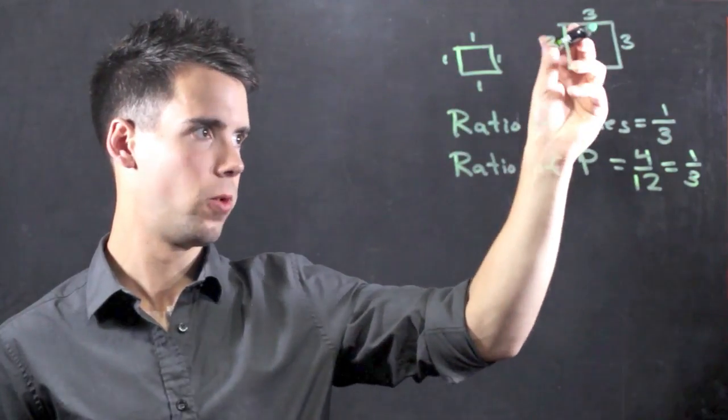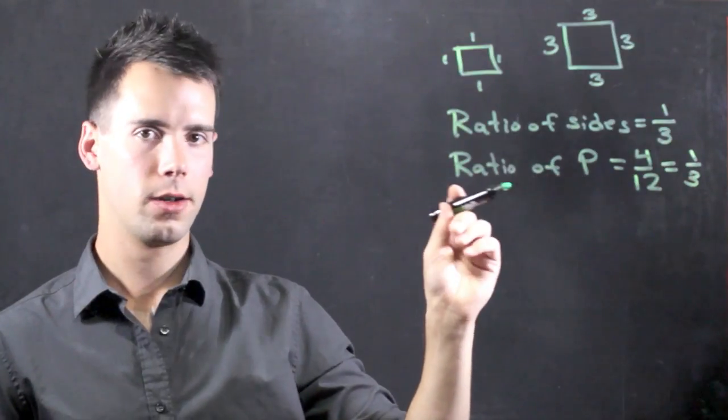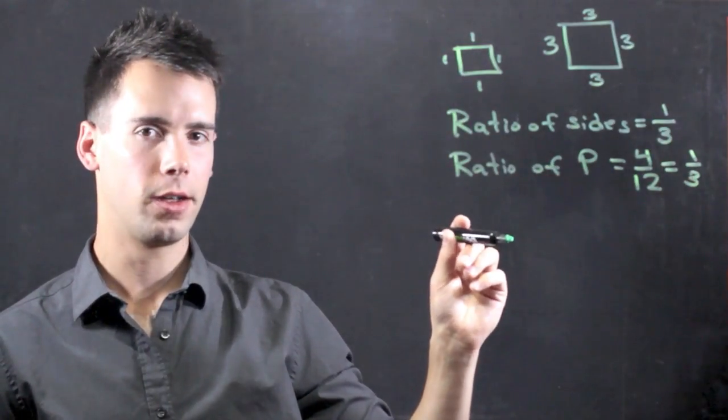If each side was 4, the ratio would be 1 to 4. So the ratio of sides is directly proportional, in fact equal to the ratio of the perimeter of two polygons.